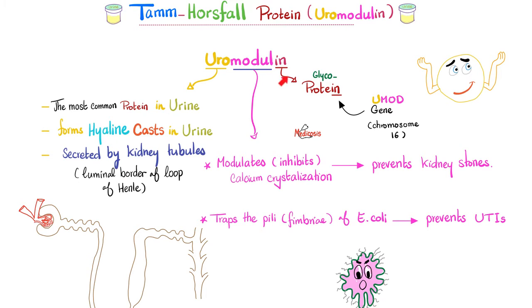Let's dig deeper into what TAM Horsfall protein or uromodulin actually is. It ends in 'in' because it's a protein — specifically a glycoprotein, meaning it's made of protein and carbohydrate: sugar plus protein. Any protein is coded for by a gene. Since this is called uromodulin, the gene is called the UMOD gene, found on chromosome number 16. It is arguably the most prevalent protein in the urine, and it makes hyaline casts.